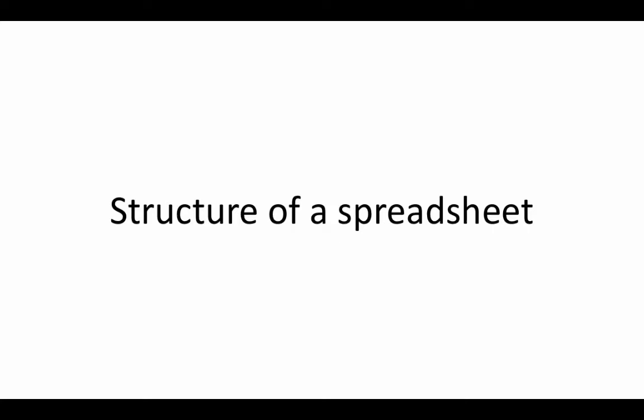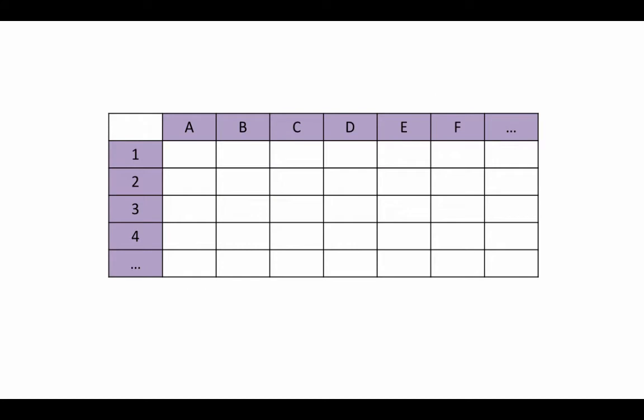Let us understand the structure of a spreadsheet. A spreadsheet structure is actually very simple — it's got a bunch of columns and a bunch of rows. The columns are given alphabetical names, so the alphabets A, B, C through Z are used as column names, and if we want more columns the further columns are named AA, AB, AC, etc.